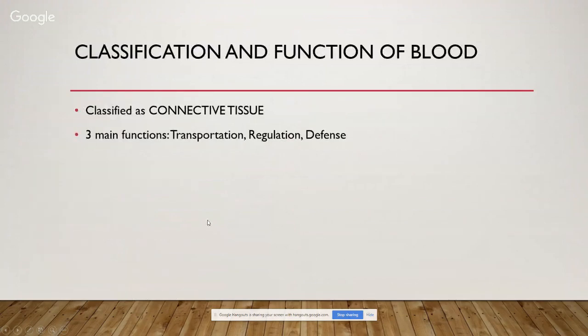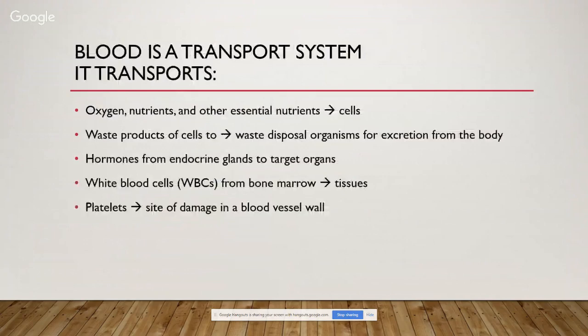First, we need to talk about the classification and function of blood. It is actually classified as connective tissue. The three main functions of blood are to transport, regulate, and defend the body. It transports oxygen, nutrients, and other essential substances to the cells. It takes waste products of cells to waste disposal organs for excretion from the body, and it transports hormones from endocrine glands to target organs, white blood cells from the bone marrow to the tissues, and platelets to any site of damage in a blood vessel wall.